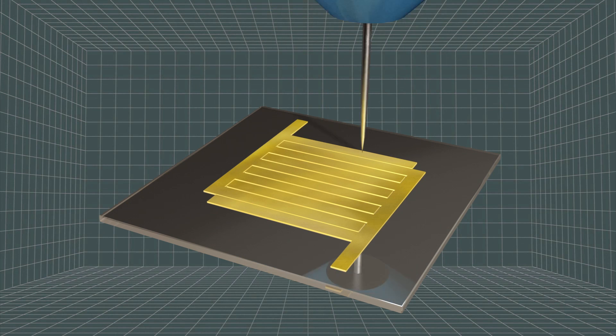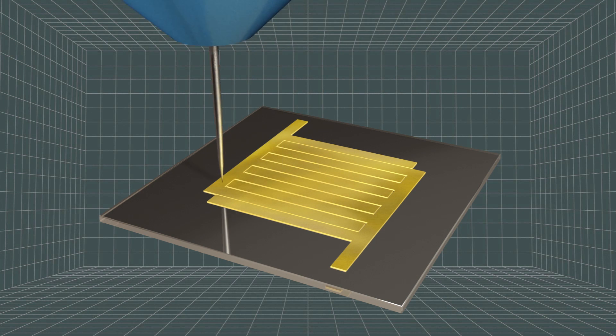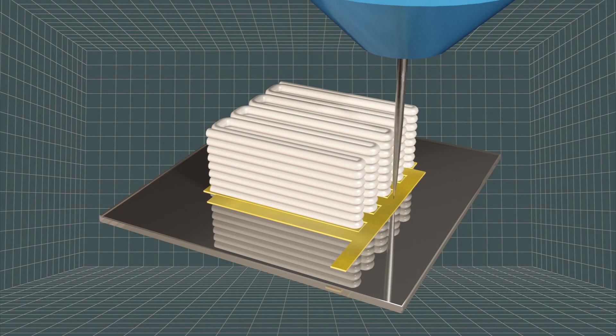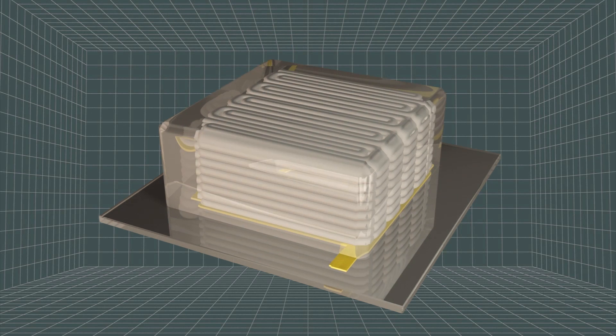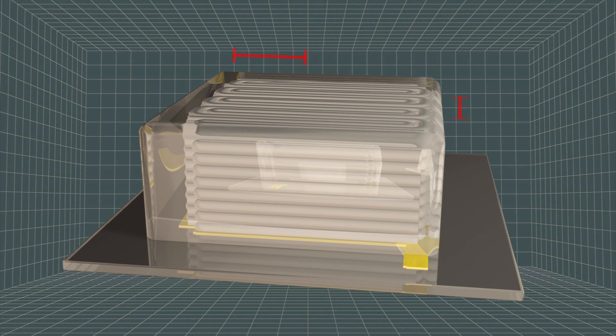The ink is printed on a glass substrate with a gold current collector, where it solidifies to create the battery's anode and cathode. A tiny container filled with an electrolyte solution encloses the electrodes to complete the battery.